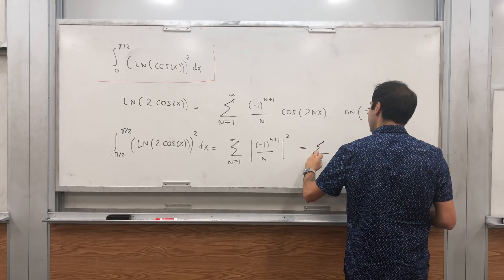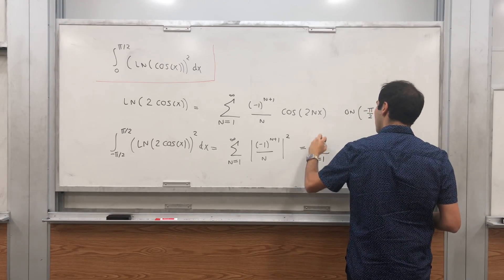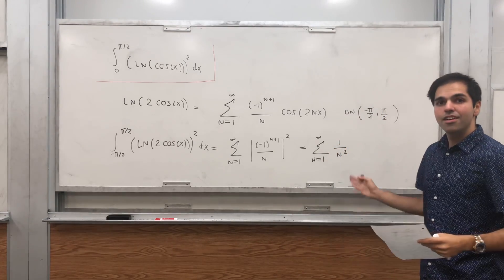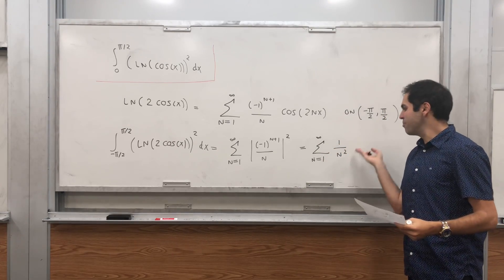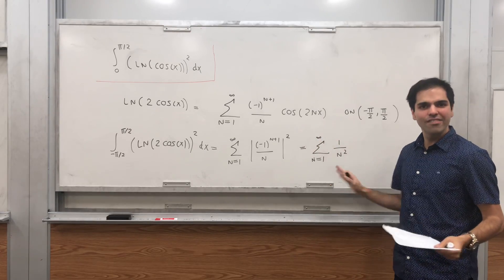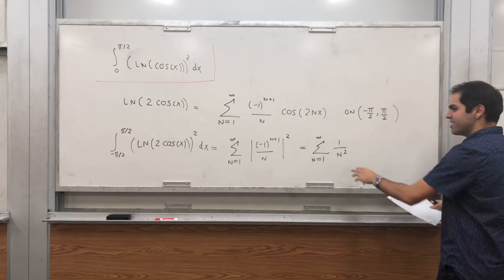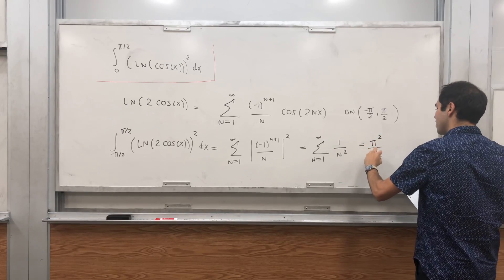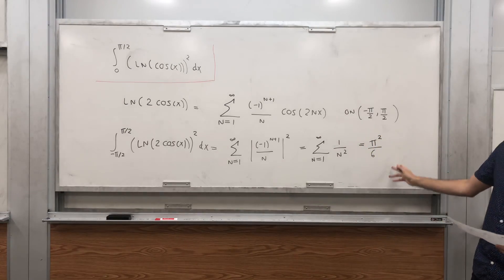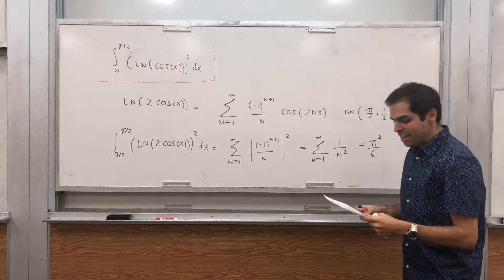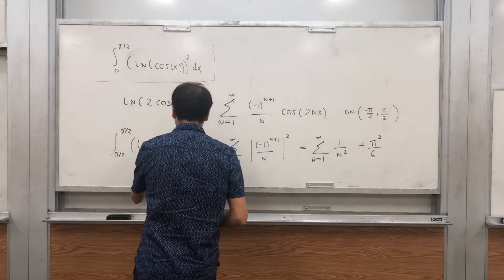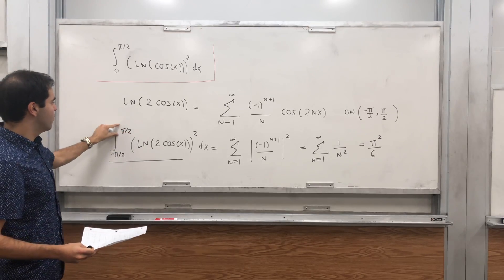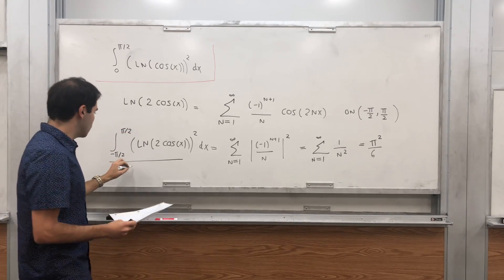That sum is the famous Basel problem, which equals π²/6 — and I also have a video on that. We'll need this identity to derive our integral. Lastly, we have to normalize by dividing by π/2.